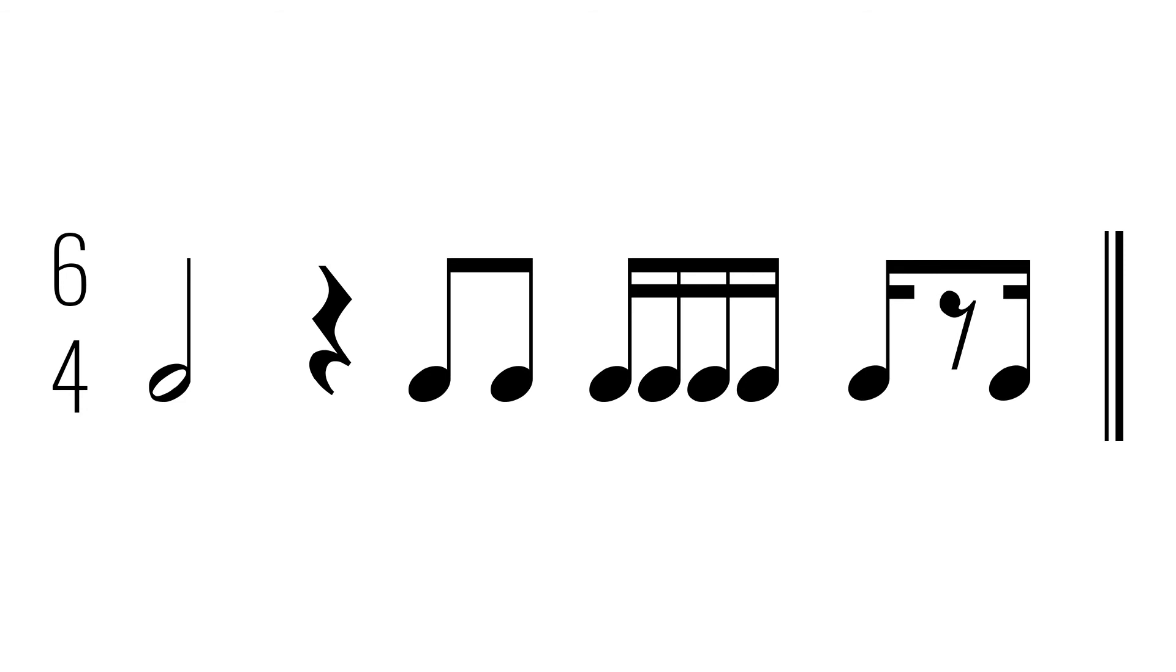We are in six four time, so six quarter notes per measure. The half note will receive two counts, so let's write a big one and a small two. The quarter rest receives one count, so let's give it count three. The eighth notes each get half of a count, so they'll get four and.